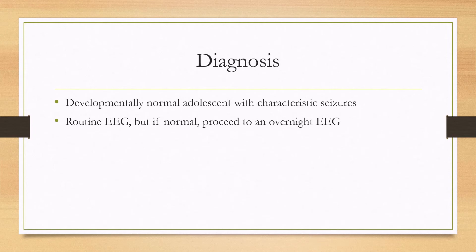To diagnose this disorder, you should suspect it in any developmentally normal adolescent presenting with the characteristic seizures. You can start with a routine EEG, and if you don't see any abnormalities, you can proceed to an overnight EEG, which will have higher yield.